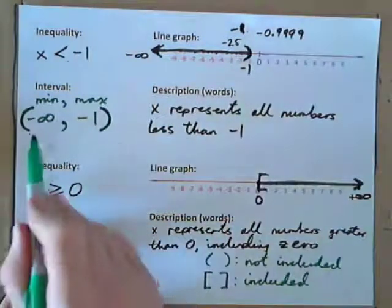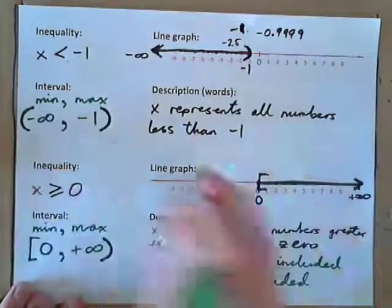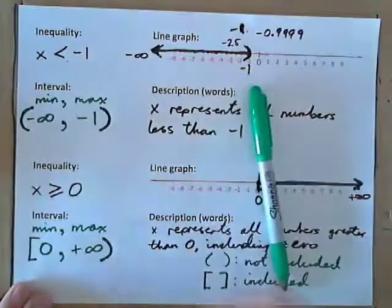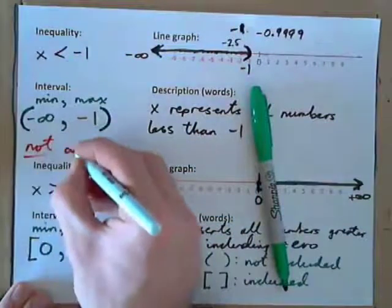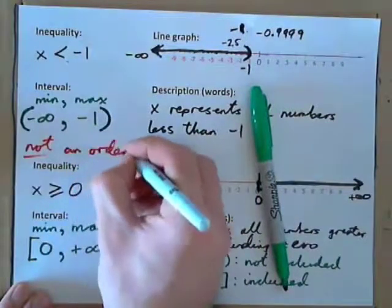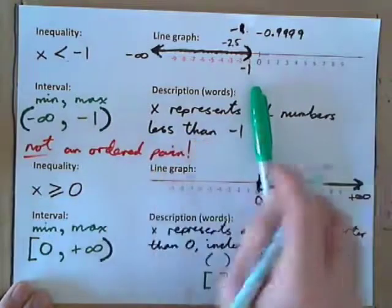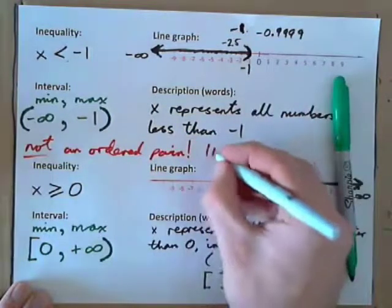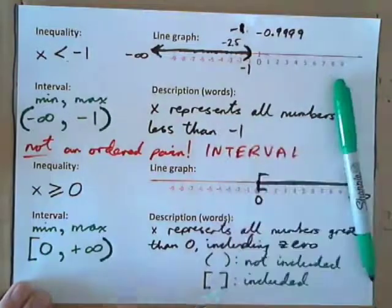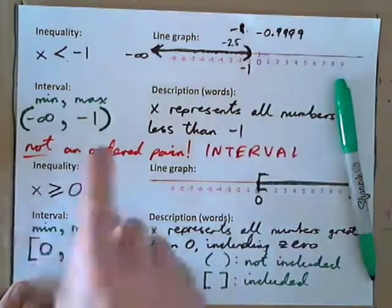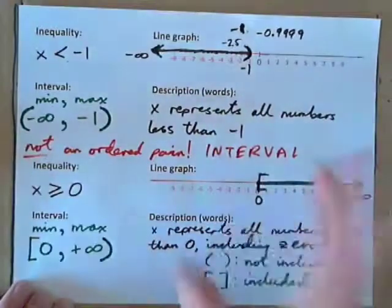Now, this interval is actually looking just like an ordered pair — but beware: it is not an ordered pair. It's an interval. Intervals look like ordered pairs sometimes, especially when the min and max are both actual numbers and not infinities.